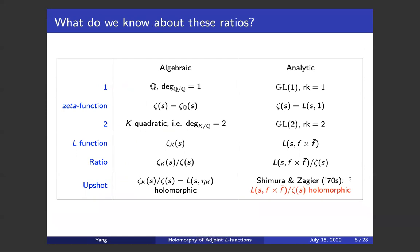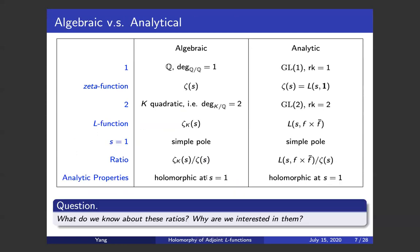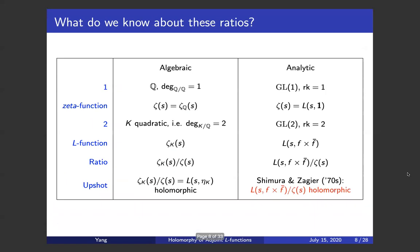First, I'll tell you some properties of these ratios. They are regular at s equal to 1. But in fact, the analytic structure of these ratios is quite rigid — they are actually holomorphic at every point on the complex plane. This is simple on the algebraic side, because the ratio is simply the Artin L-function attached to the quadratic character chi_K, where chi_K is a character attached to this field extension. But things would be dramatically more difficult from the analytic side. It's a theorem of Shimura and Zagier in the 1970s that this ratio from the analytic side is holomorphic as well.